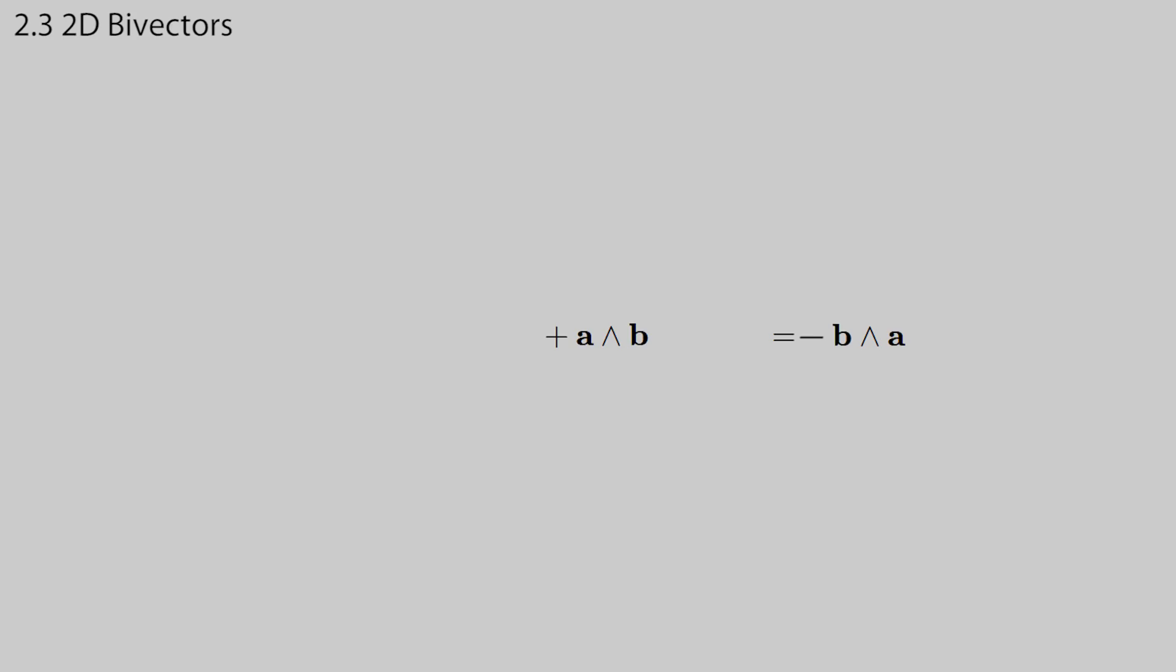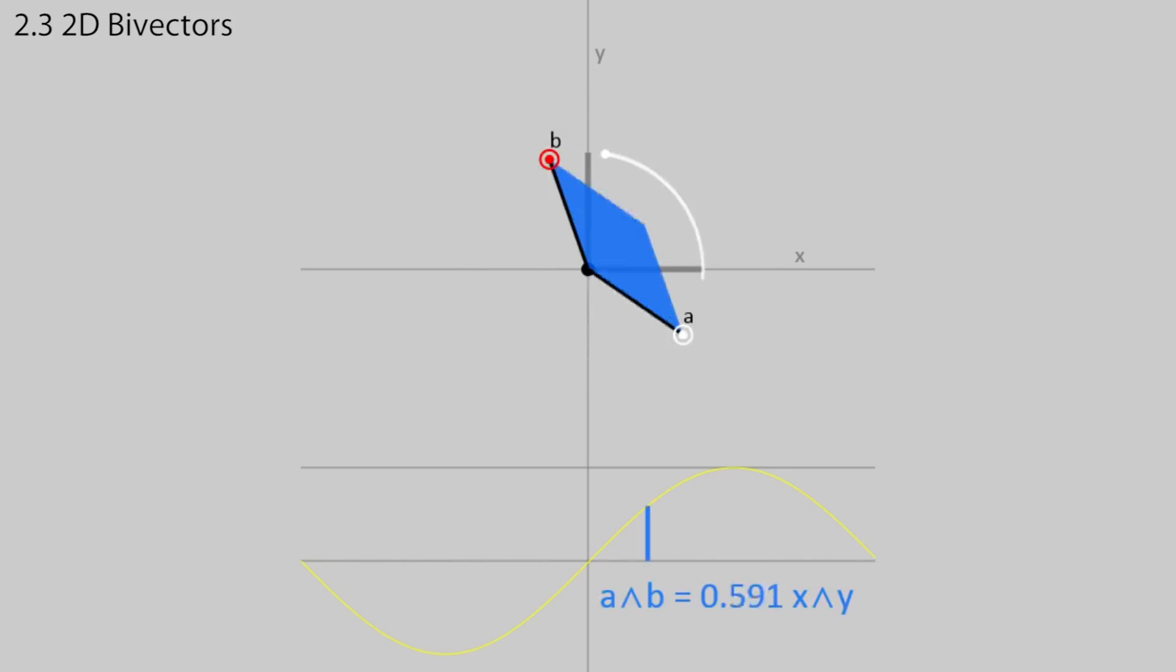Here, the sign is represented using a color, which changes from blue to green. The sign changes whenever the rotation from a to b goes from being clockwise to being anti-clockwise. That is, if it matches the x to y direction or the y to x direction.